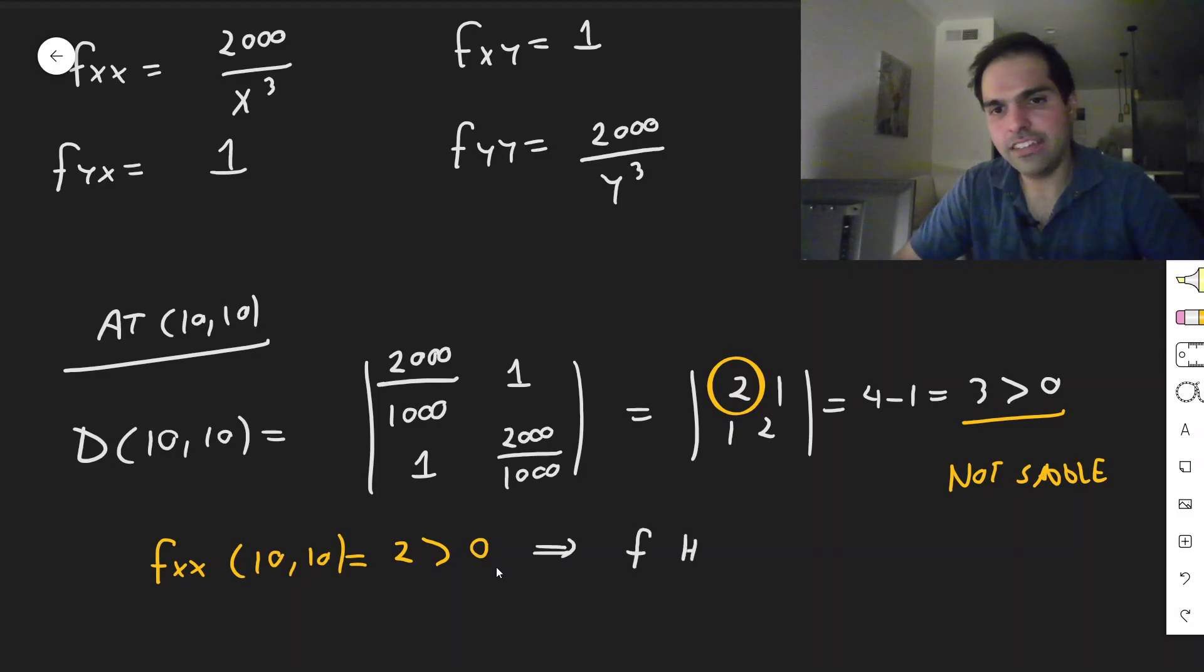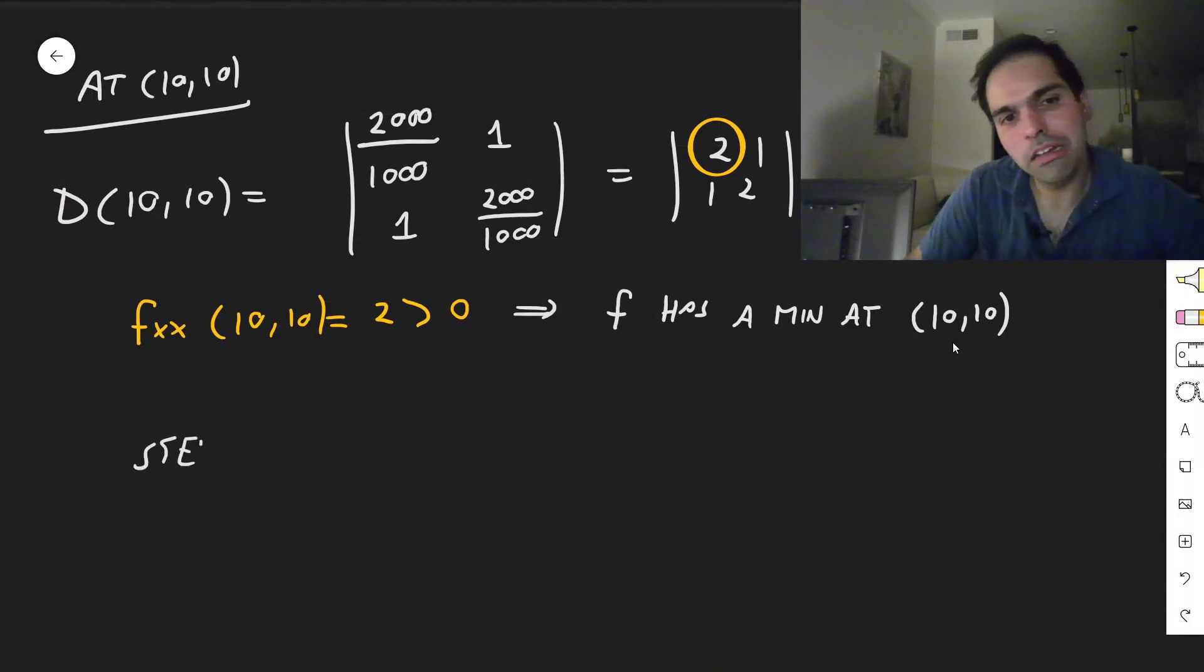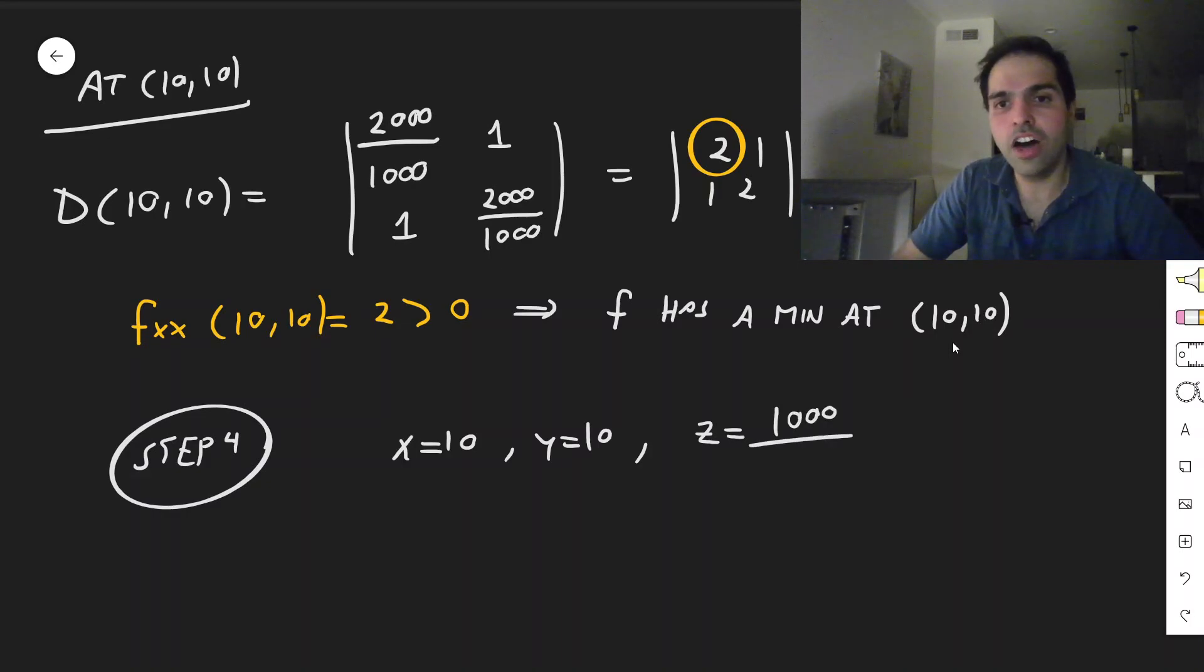So in other words, f has a minimum, at least a local minimum at 10, 10, which turns out to be a global minimum. So we get that f has a minimum at x equals 10, y equals 10, and technically, now you can already find the smallest surface area. But let's be lazy and clever, because what is z? It's 1,000 over xy, which is 1,000 over 100, which is 10.